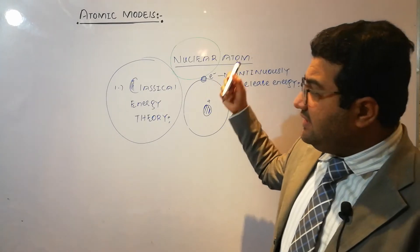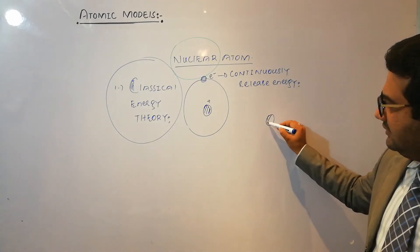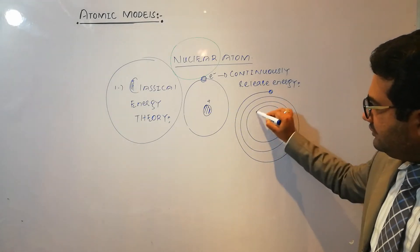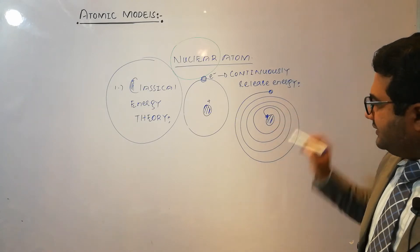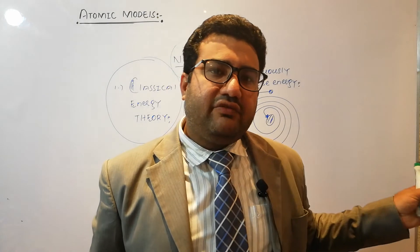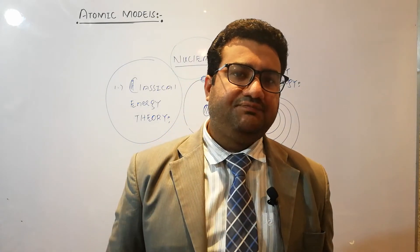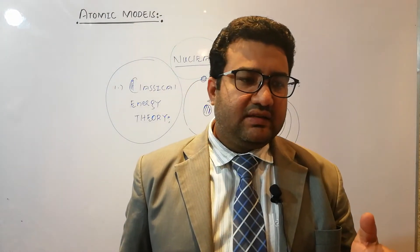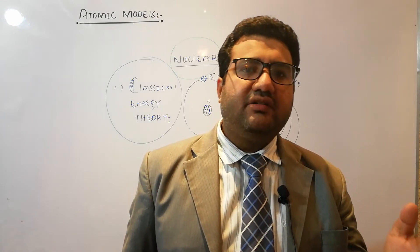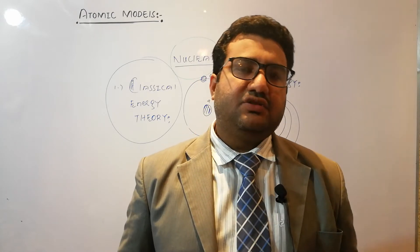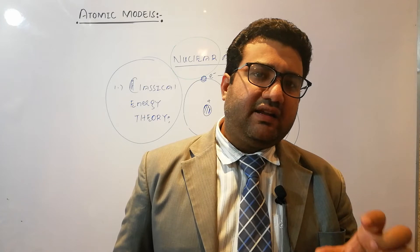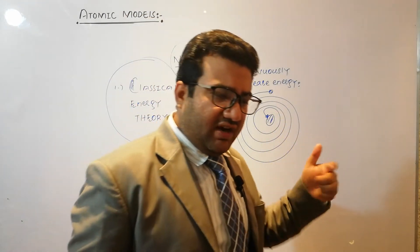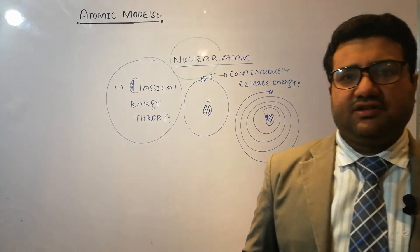If it continuously releases energy, what will happen? The distance between the nucleus and electron will keep on shortening, and there will be a time when this electron will fall into the nucleus and the atom will collapse. So according to this model, the Rutherford atom is unstable. But this is contradictory to the actual fact — atoms are highly stable. That was the first limitation of Rutherford's atomic model.